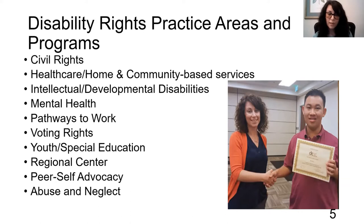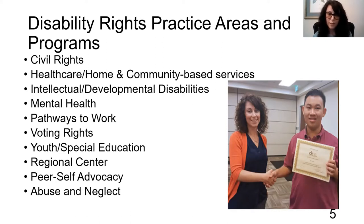We have a voting rights practice group and a youth and special education practice group. We have a unit for advocacy for regional center clients called the Office of Clients' Rights Advocacy — and everywhere there's a regional center, there's also a clients' rights advocate to help clients understand their rights and access services. We have a peer advocacy unit — the unit that I believe will be joining you next week — which is people with disabilities teaching skills to other people with disabilities. We also have a unit that looks at investigations of abuse and neglect.